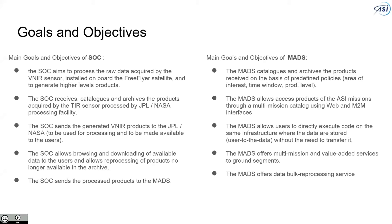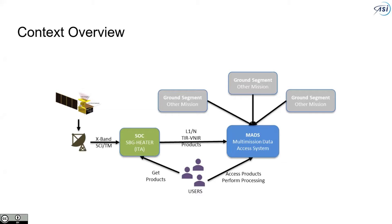The main objective and goal of ASI is to make this data accessible to machine-to-machine interfaces, but also to apply the paradigm of bringing the user to the data in order to allow users to perform their own processing directly where the data are. The MADS offers multi-mission value-added services to the ground segment and bulk data processing services. The SOC is a basic ground segment devoted to the processing of raw data, while the MADS is the place where data can be distributed to the user communities.